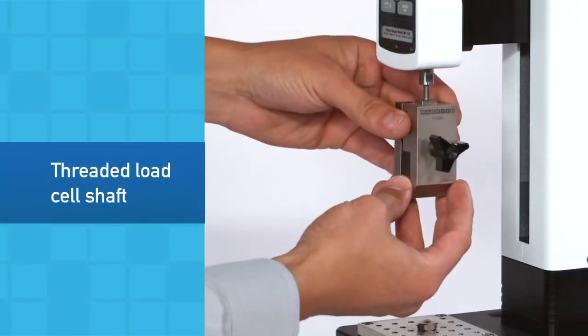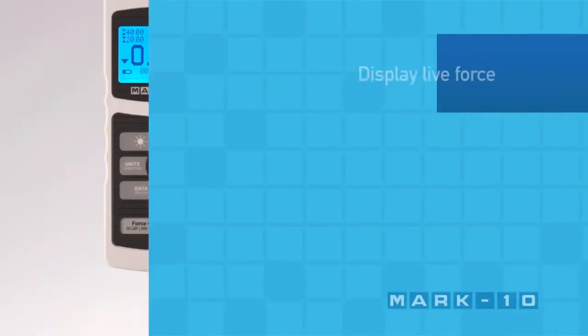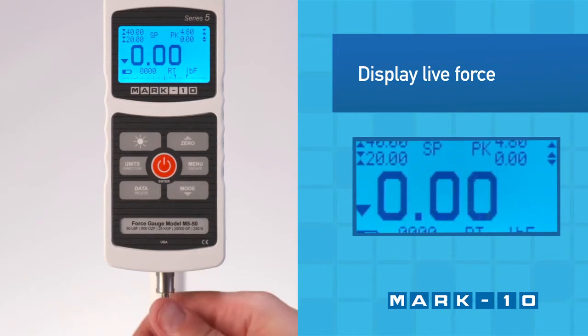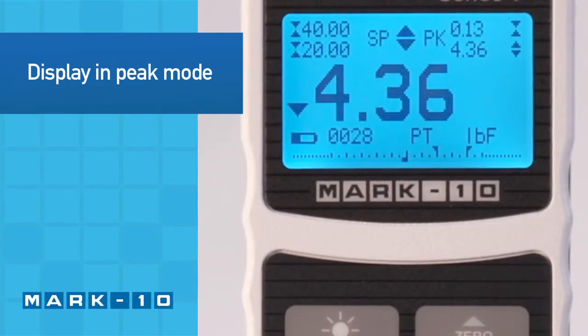The threaded load cell shaft is used to attach grips and attachments. Push and pull on the shaft to display the live compression or tension force in real-time mode. In peak mode, the display freezes when the peak force has been reached.